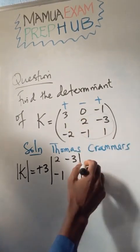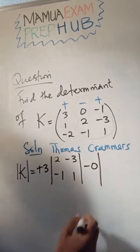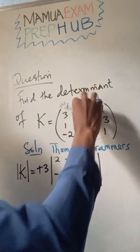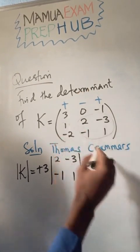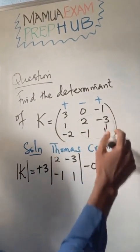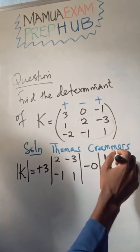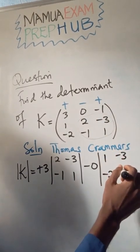Next we have minus 0. What I'm going to be using is, I'm going to cover this and this, so I'll be using this: 1 minus 2 and this, which we have as minus 3 and 1.